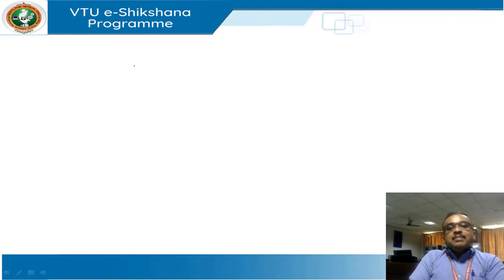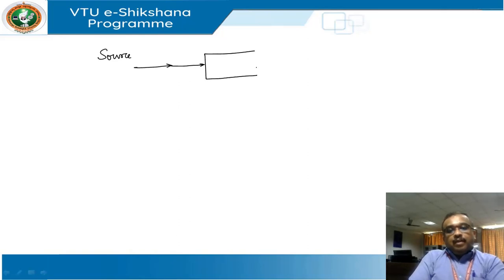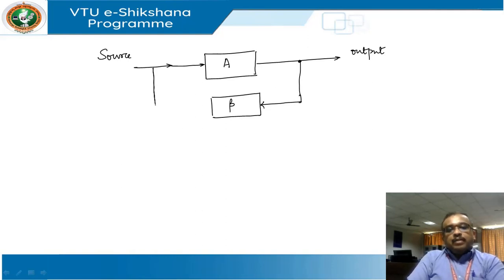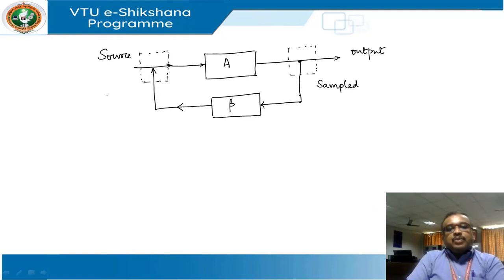We will quickly understand how we arrive at the topologies using a simple block diagram structure with a source, amplifier A, output, and feedback network. A part of the output is sampled and fed back to the input side, where it gets mixed with the source signal. This gives us two terminologies: one is called a sampler, and the other is called a mixer.